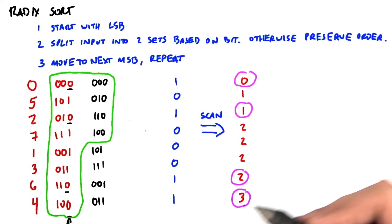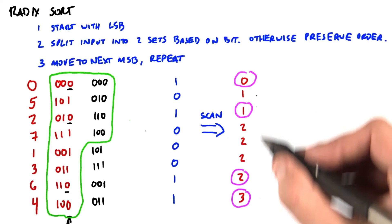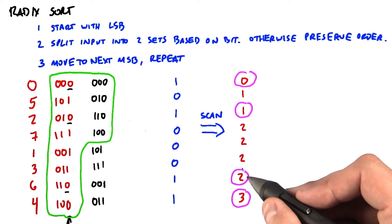Notice that the last element of the scan, with a little bit of extra math because it ends with a 0 element here, tells us how many 0 bits there are total in the input. In this case, there are 4: 1, 2, 3, 4.